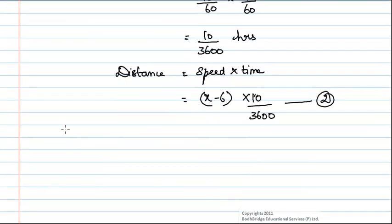Now, we have to equate equation 1 with equation 2, because distance covered by the train will be equal to the length of the train. Here, the length of the train is the same in both cases. So, we can equate equation 1 with equation 2.